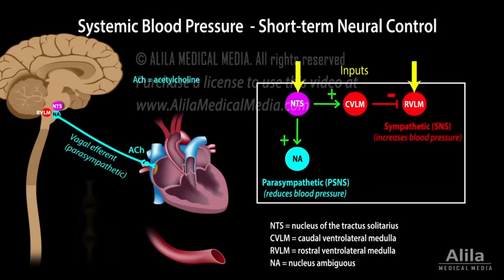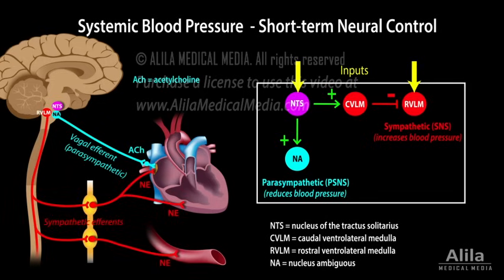On the other hand, the sympathetic arm, the SNS, releases norepinephrine, which acts on the SA node to increase heart rate, on cardiac myocytes to increase stroke volume, and on vascular smooth muscle to cause vasoconstriction. Thus, SNS activation leads to higher blood pressure.